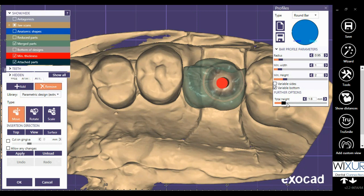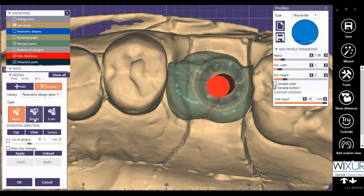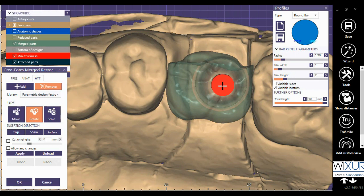Now adjust bar height and radius. Position the bar with the use of Move and Rotate buttons.